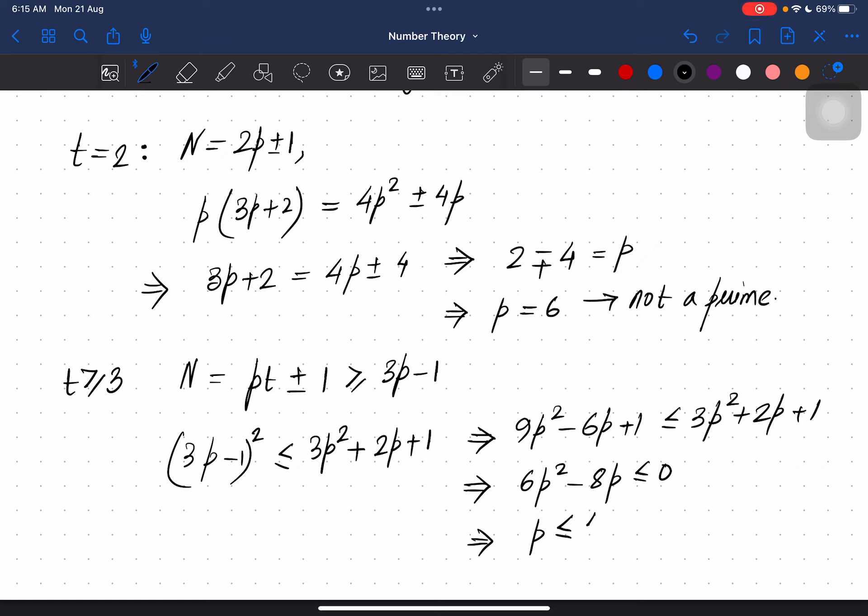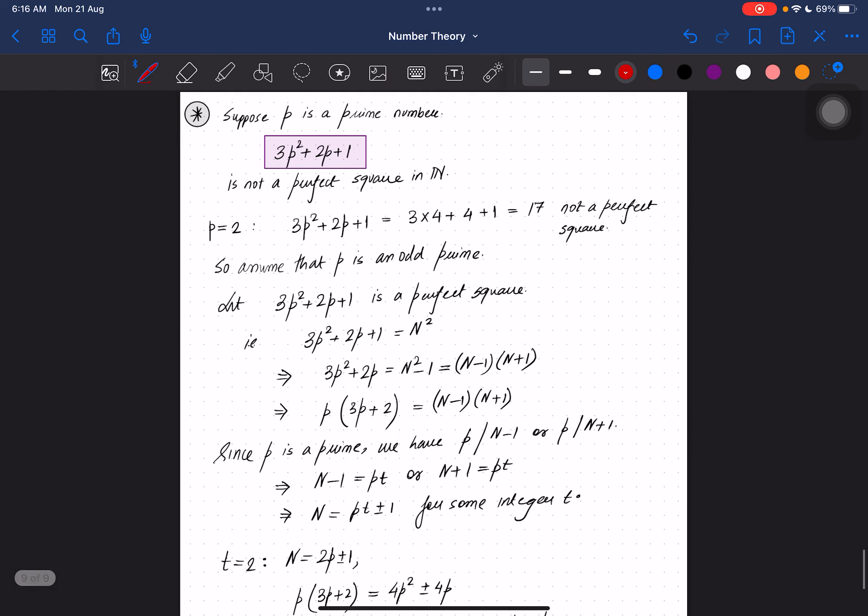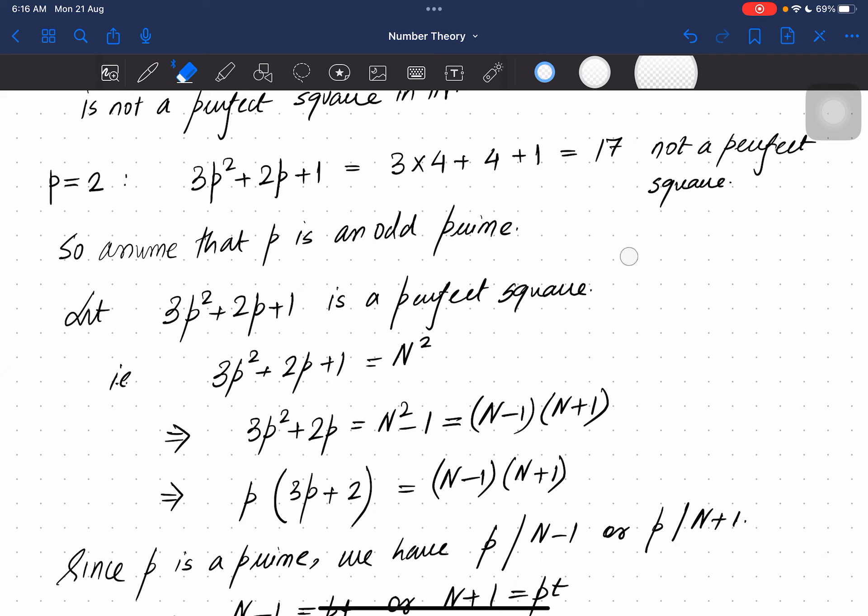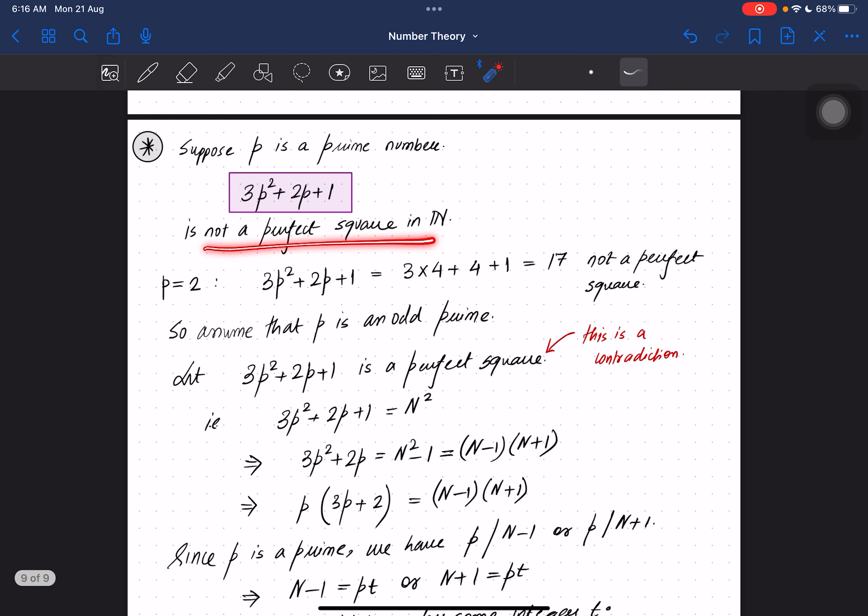There is no solution for a prime that is less than or equal to 4/3. So in this case it will also not work. In the t=2 case we got p = 6 which is not a prime, and p ≤ 4/3 for the other case also does not have any solution. So what we assumed is a contradiction. This is a contradiction and the result is true that it is not a perfect square in natural numbers.